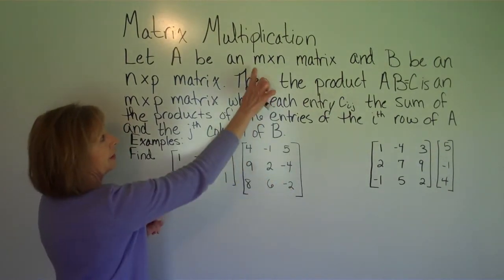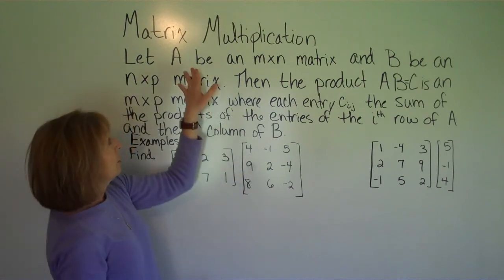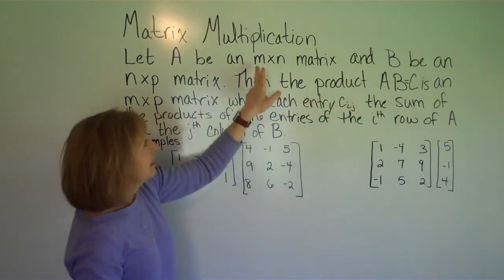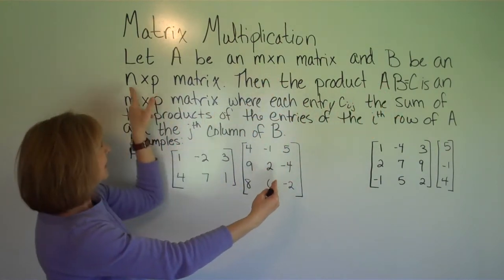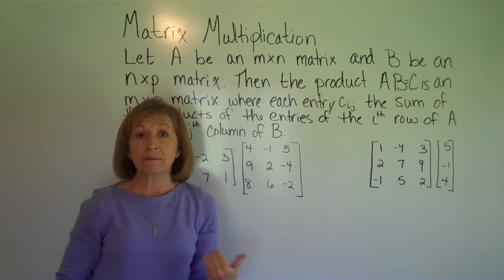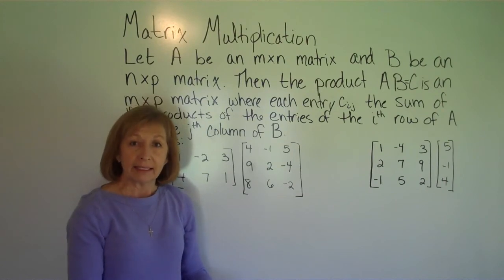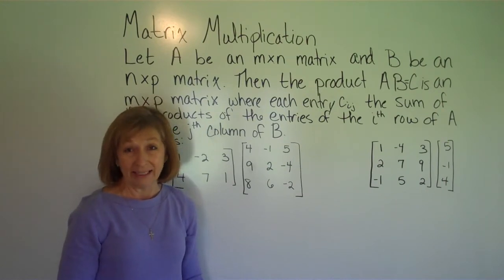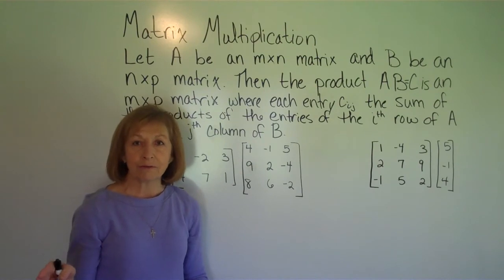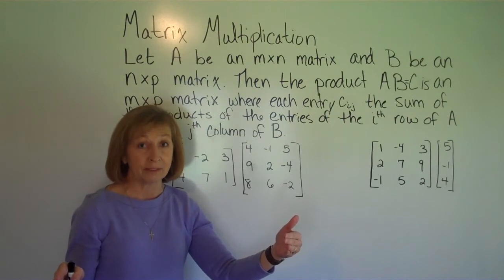Notice in the definition, whenever we give a dimension of a matrix, it's the number of rows by the number of columns. The first matrix on the left of the multiplication is an M by N matrix, and the second matrix is an N by P matrix. These inside numbers have to match — the number of columns of the matrix on the left has to match the number of rows of the matrix on the right for the multiplication to be defined. If those inside numbers match, then the outside numbers give you the dimension of the answer: the number of rows of the first matrix and the number of columns of the second matrix.